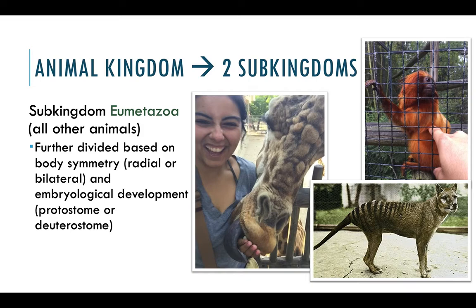Sponges are the earliest organisms in the animal kingdom and they do not have any true tissues. The other subkingdom is Eumetazoa — these are all the other animals, any animal that is not a sponge. We can divide this group by their body symmetry, whether they're radial or bilateral, as well as the way they develop their embryos — whether they're a protostome or a deuterostome, and we'll talk about what that means later on.